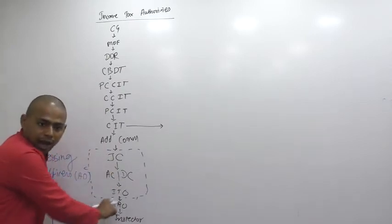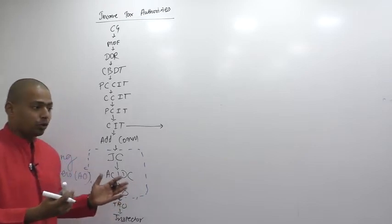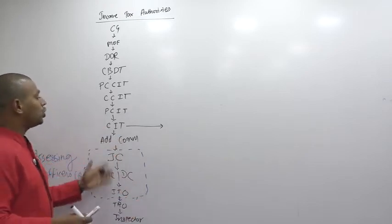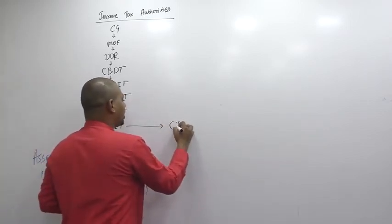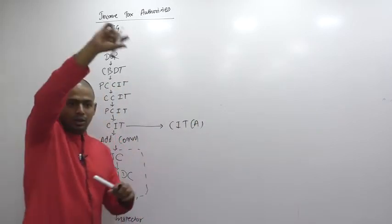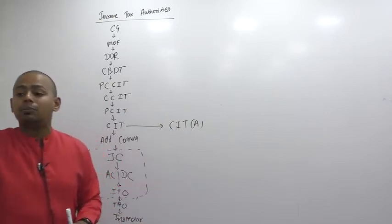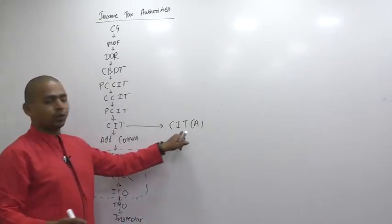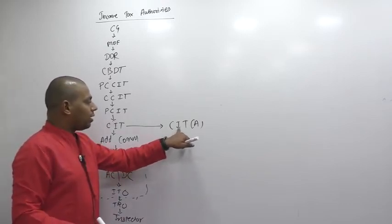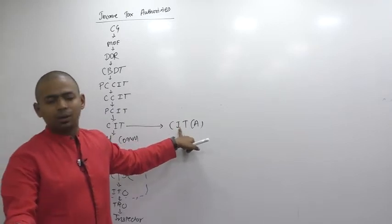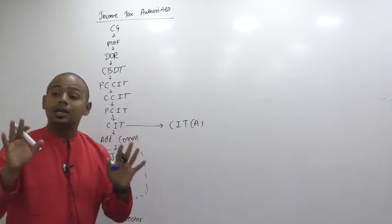So these people will send you notice. AO will send you notice and you wanted to appeal against that notice, you want to challenge that notice. So you will challenge to CIT, but not this CIT. There is a separate CIT in income tax department and that is CIT Appeal, in bracket A. Outside cabin will be written CIT bracket A. That means that commissioner is commissioner of appeal. Assessee can go there to complain against this AO. So that guy may not give you justice, may give you justice, sometime may not give you justice, yes or no. So can I appeal order of CIT appeal? Answer is yes.